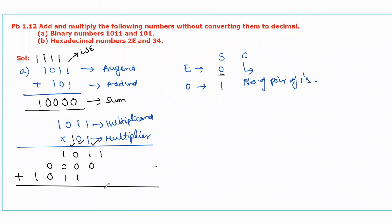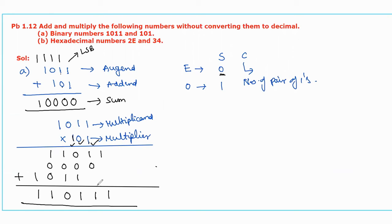Starting from LSB: this is 1. 1 plus 0 is 1 — odd number of 1s. 0 plus 0 plus 1 — odd number of 1s. 1 plus 1 plus 1 — even number of 1s, the sum will be 0, and one pair means one carry is forwarded to the next position. 1 plus 0 plus 0 plus 1 carry is 1 — odd number of 1s, with no further carry, so 1 is written directly. This is the final product value for the multiplication of two binary numbers.